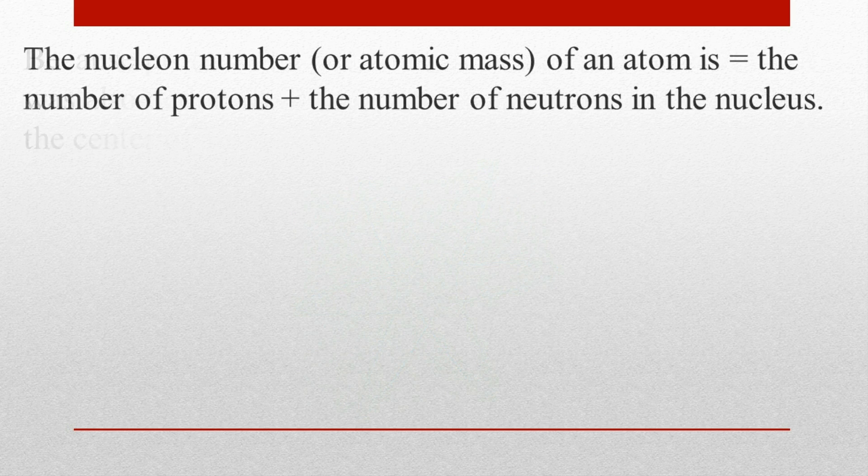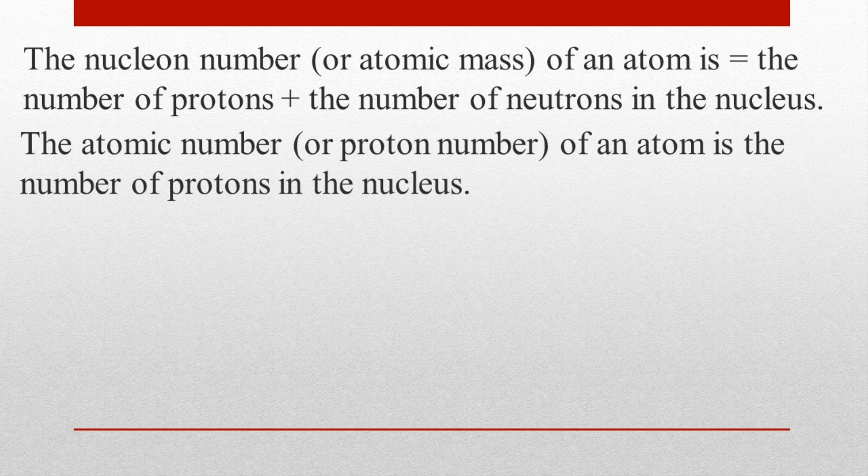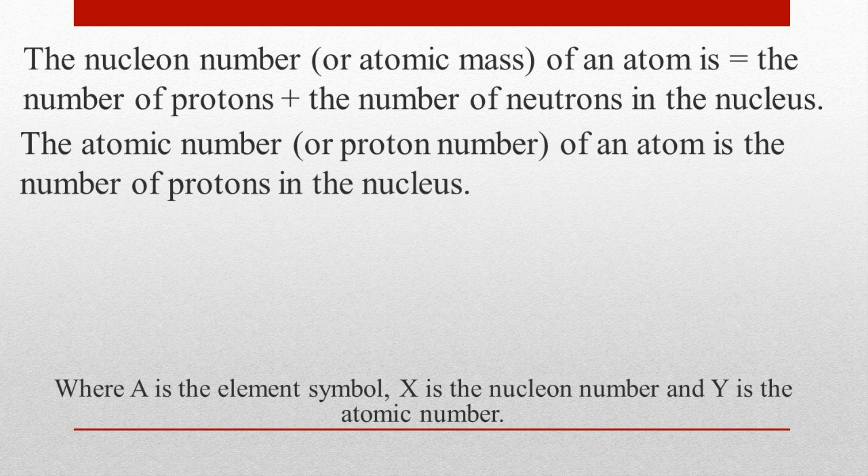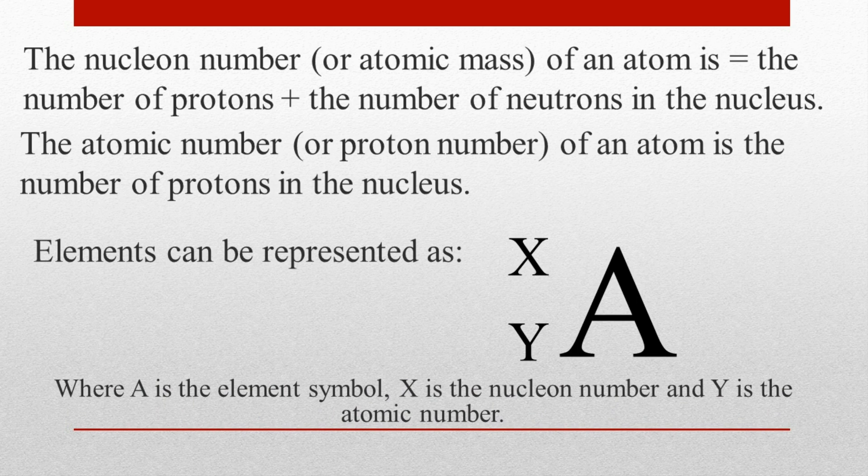The nucleon number, or atomic mass, of an atom is the number of protons plus the number of neutrons in the nucleus. The atomic number, or proton number, of an atom is the number of protons in the nucleus. Elements can be represented as X (nucleon number) over Y (atomic number) followed by A, where A is the element symbol.